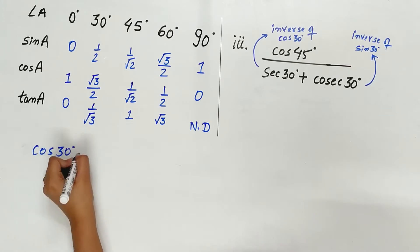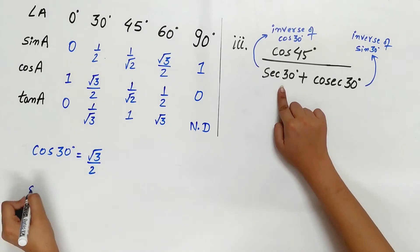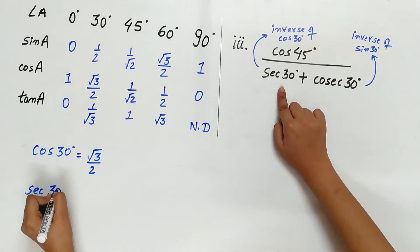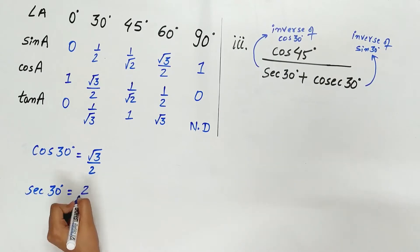Cos 30 degree is root 3 by 2. Sec 30 is inverse of cos 30, that is 2 by root 3.